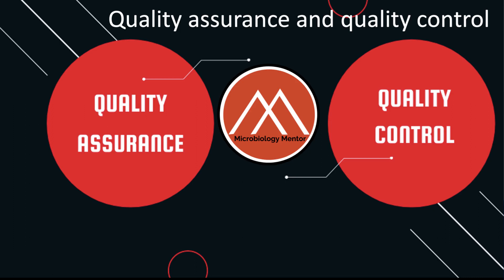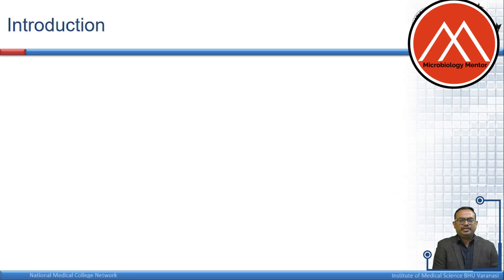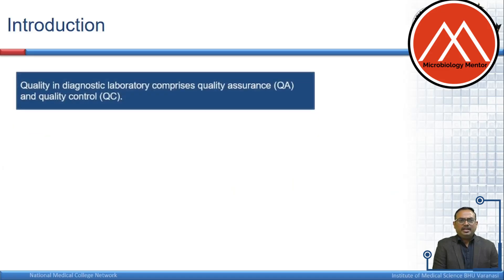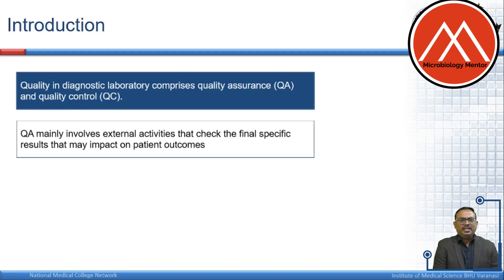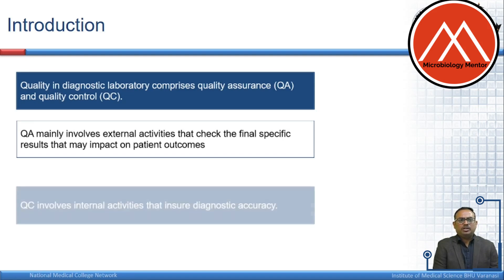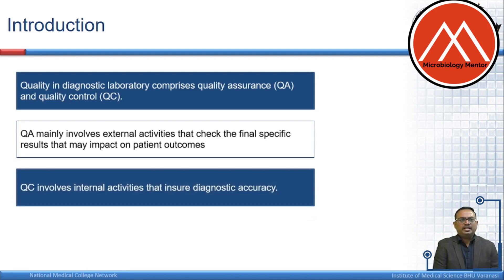Today in this module we will learn about quality assurance and quality control in microbiology laboratory. Quality in diagnostic laboratory comprises quality assurance and quality control. Quality assurance involves external activities that check the final specific results that may impact on patient outcomes, whereas quality control involves internal activity that ensures diagnostic accuracy.